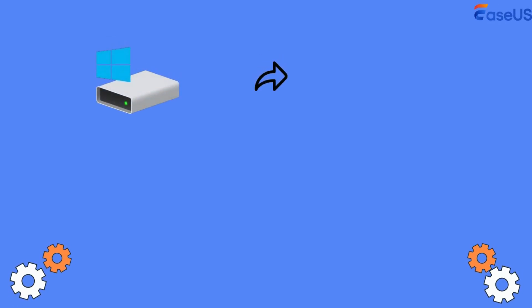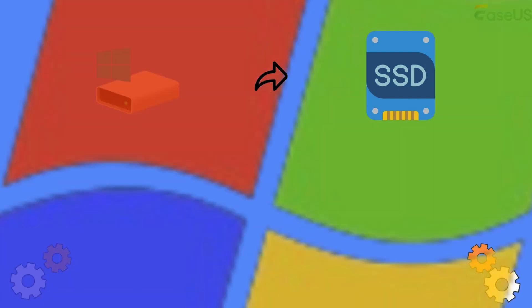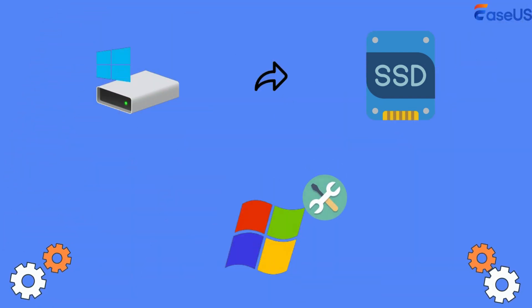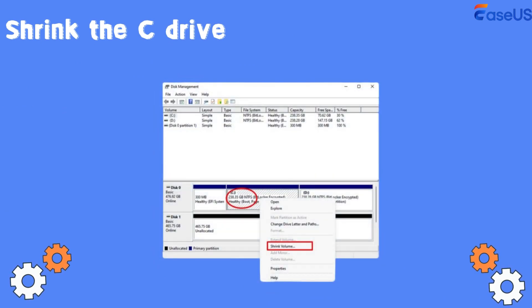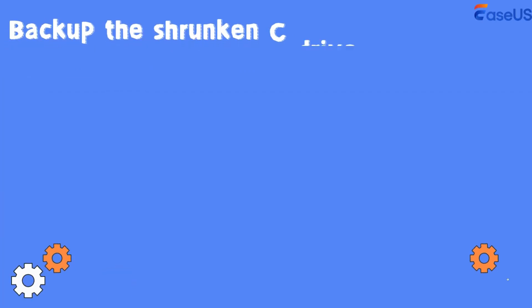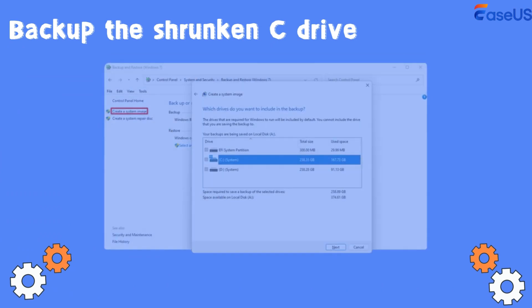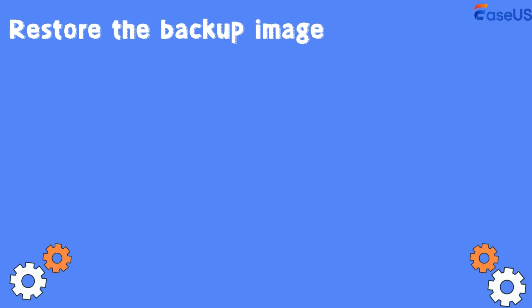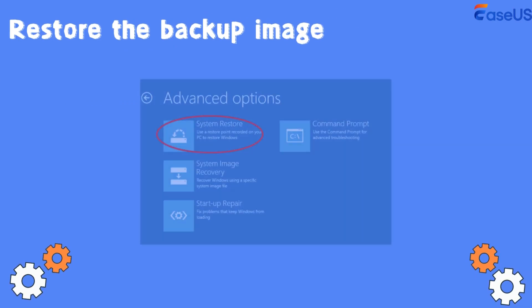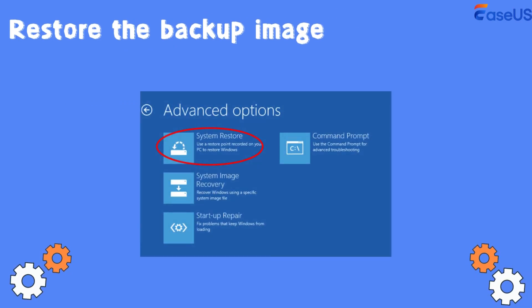We can also transfer C drive to SSD manually with the Windows built-in tool, though this way is much more complex than using EZUS disk copy. Firstly, shrink the C drive in disk management to fit on the smaller SSD. Secondly, backup the shrunken C drive — go to Backup and Restore and select Create a System Image. After that, shut down the computer, install the SSD, go to Repair Your Computer, and restore from the backup image.